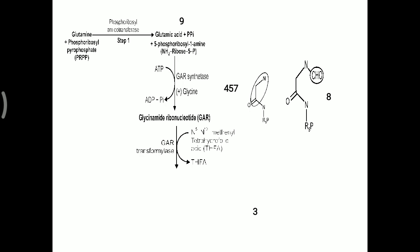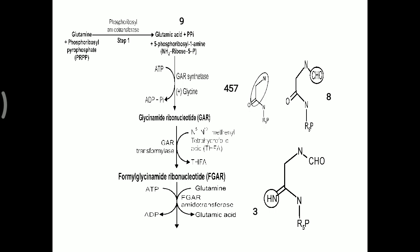Further, one more formyl group is added with the help of THFA (tetrahydrofolic acid), methanol-THFA. The GAR transformylase reaction occurs, making FGAR (formylglycinamide ribonucleotide). Then FGAR is converted into FGAM (formylglycinamidine ribonucleotide), with ATP utilized. The 3rd nitrogen is added from glutamine again via FGAR aminotransferase enzyme. Up to here: 1 ATP when glycine is added, 1 ATP again when glutamine is added.